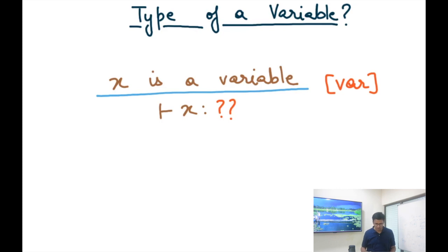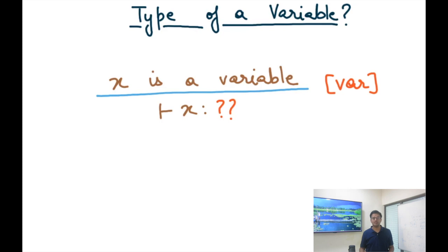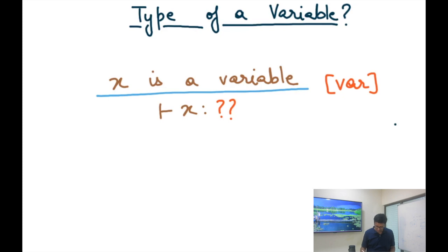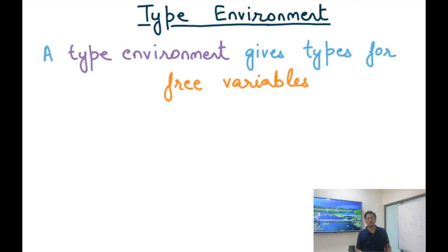We have already looked at some typing rules, but consider the typing rule involving a variable. If x is a variable, what should be its type? In our abstract syntax tree we only have the information that x is a variable — we don't have information about how it was declared, because the AST is formed using a context-free grammar. That kind of information comes from the context of where x is used, so we cannot define a type for x without knowing that context.